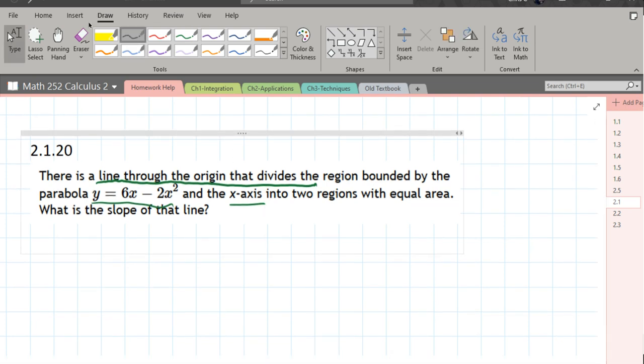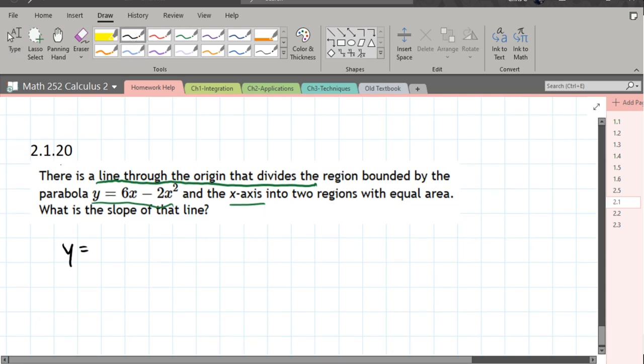So let's go ahead and start out. They want to know what's the slope of that line. Easier said than done. So we have y equals, I'm just rewriting this, quadratic and the x-axis is y equals zero.